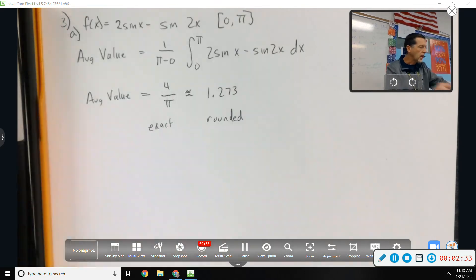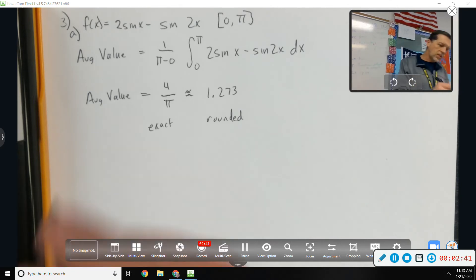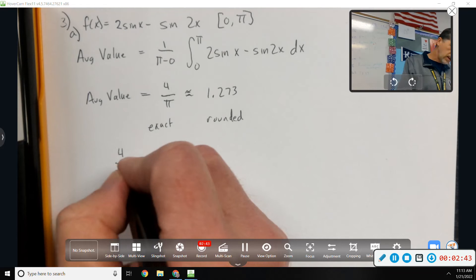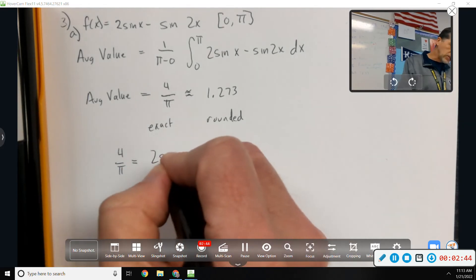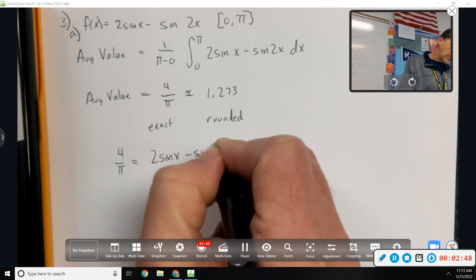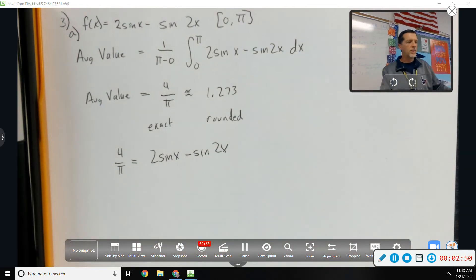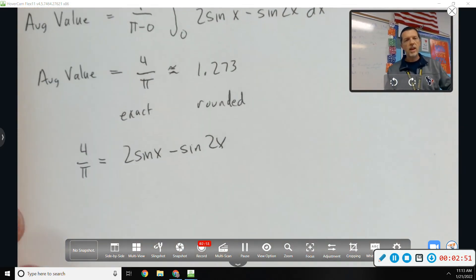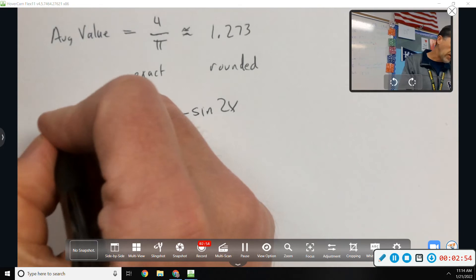All that was part A. Part B, find C such that the average value equals F of C. So, that means somewhere, four over pi equals two sine x minus sine 2x. And, I don't think I could do that by hand if I wanted to.